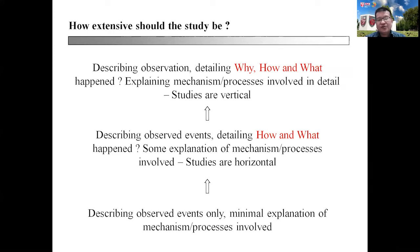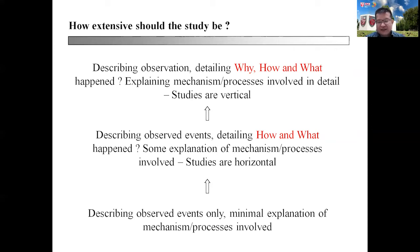The next question is: how extensive should the study be? Depending on the type of degree you are studying for — if you are only focusing on observed events with minimal explanation of mechanisms and processes involved, you are most probably doing a bachelor's level dissertation. A dissertation that details how and what happened with some explanation of mechanisms or processes — what we can term horizontal studies — is typically suitable for a master's dissertation.